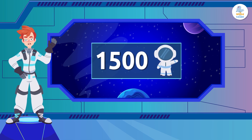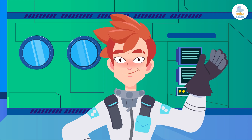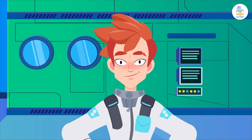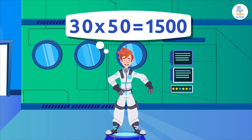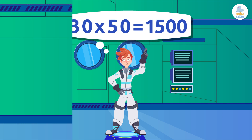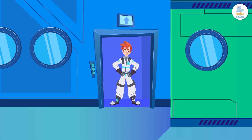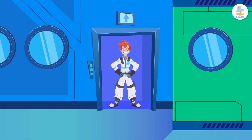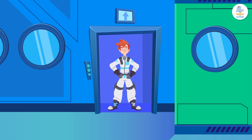Wow, 1500 astronauts! That many people live in space? I hope they have food for all of them! It's that simple: 30 times 50 equals 1500. Moving on to the next trick, let's find out how to quickly multiply hundreds by tens ending in zero.